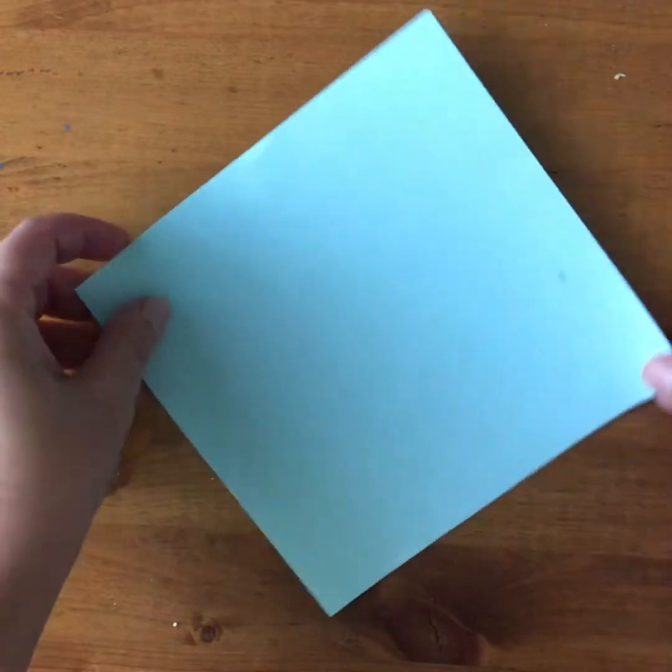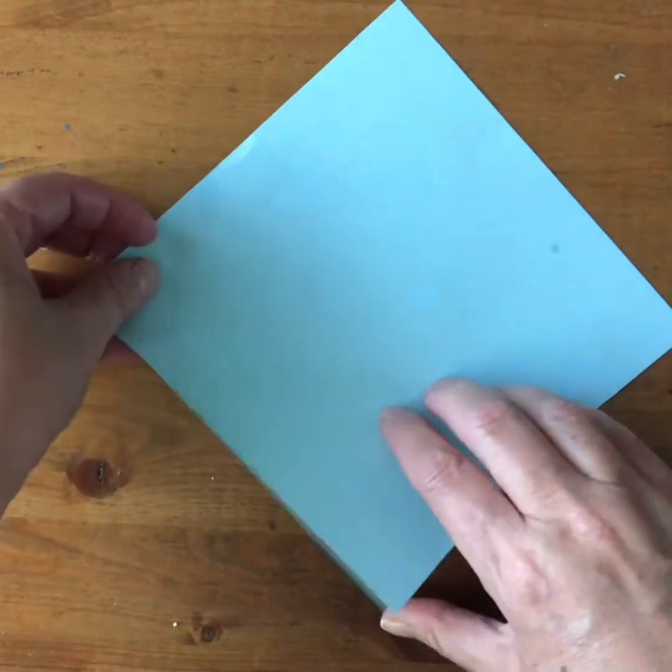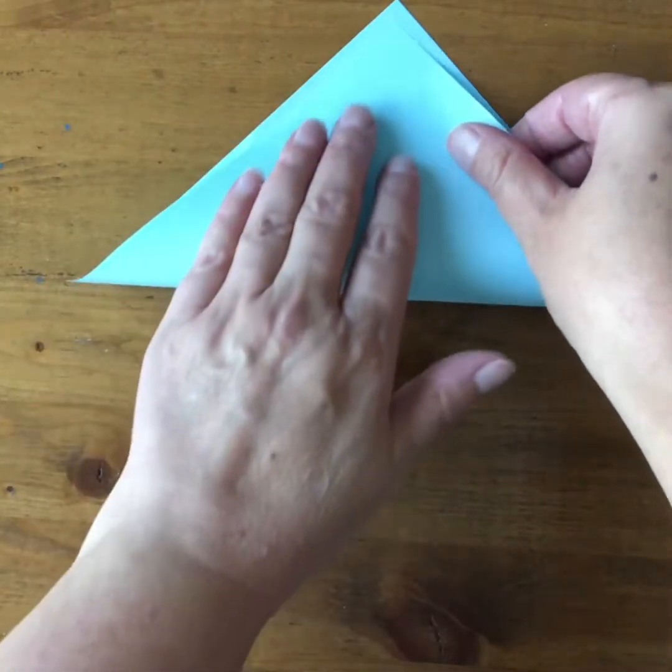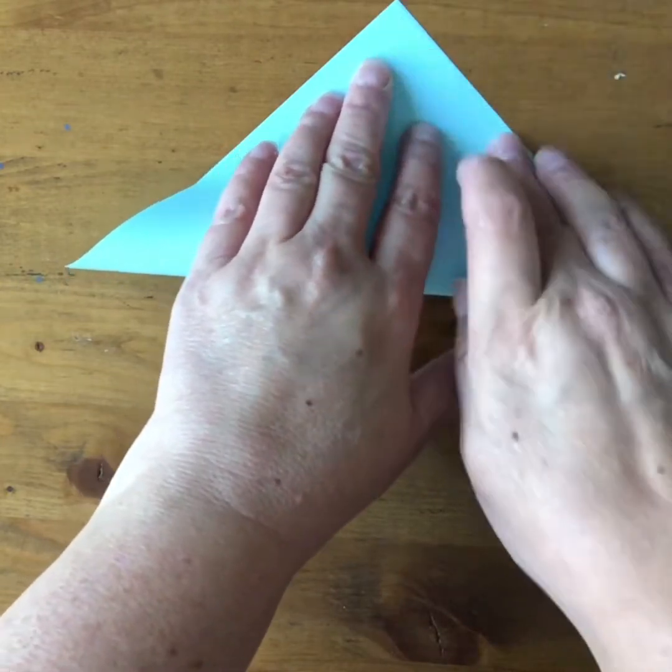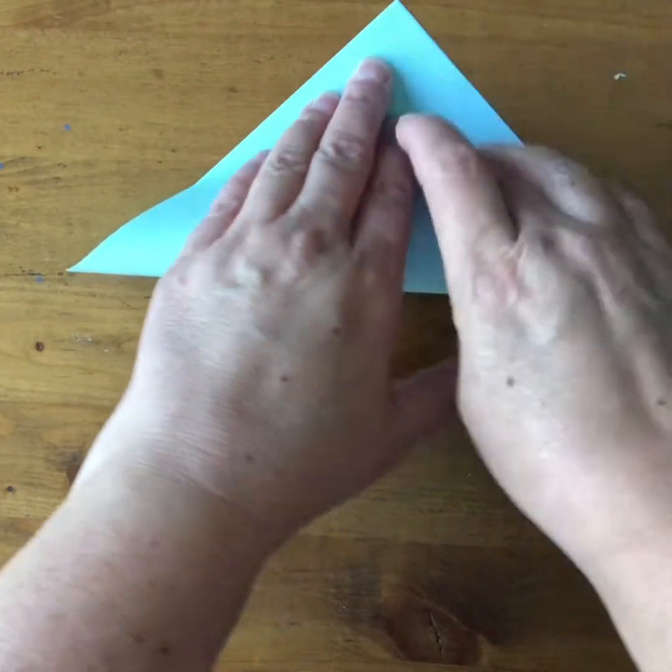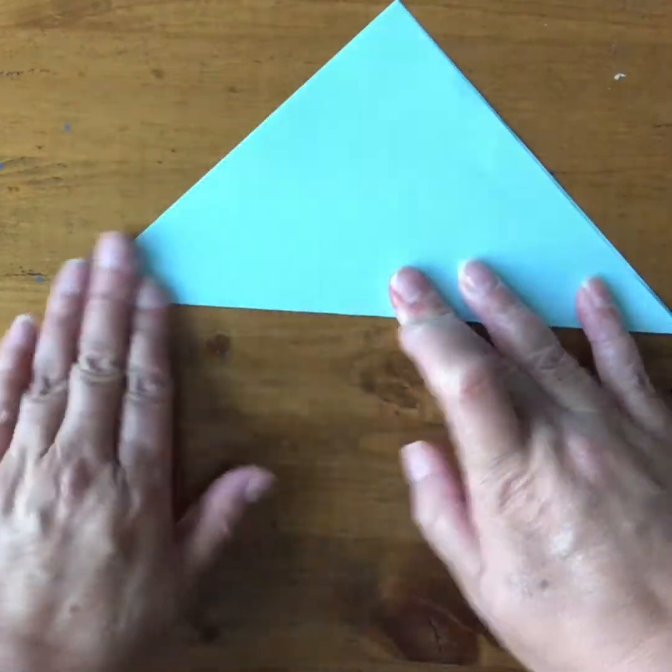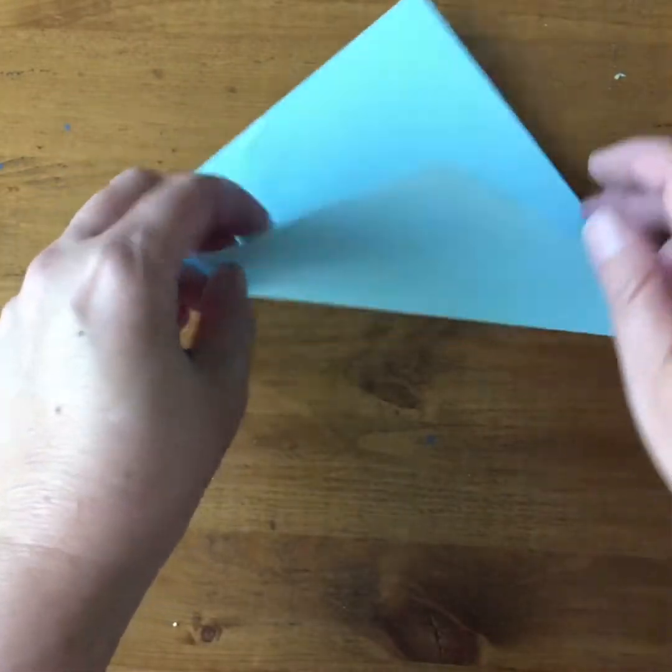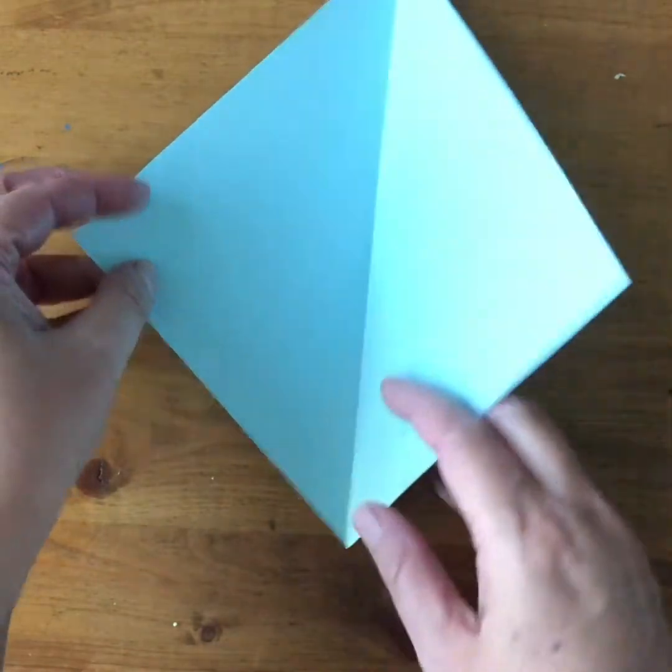So you take your square piece of paper, turn it so the vertices are pointing up and down and you just take the bottom corner or point or vertex and match it up to the one here at the top and once you have those sides and points all matched up, then you use your fingers and you crease this fold here. So you've taken your square and divided it into two triangles and we've got a line of symmetry down the middle.